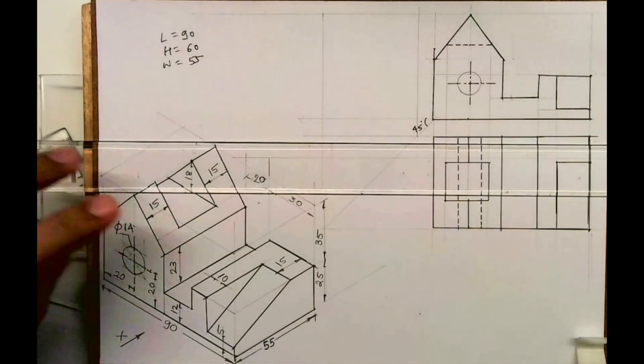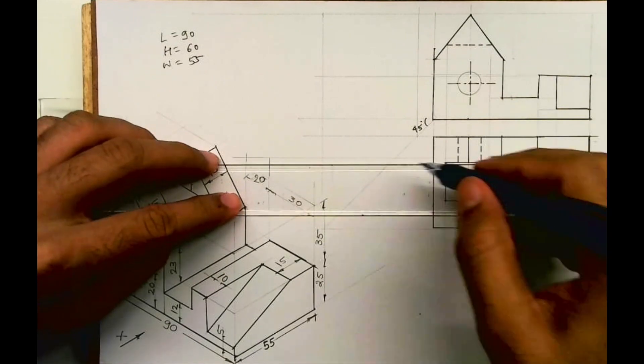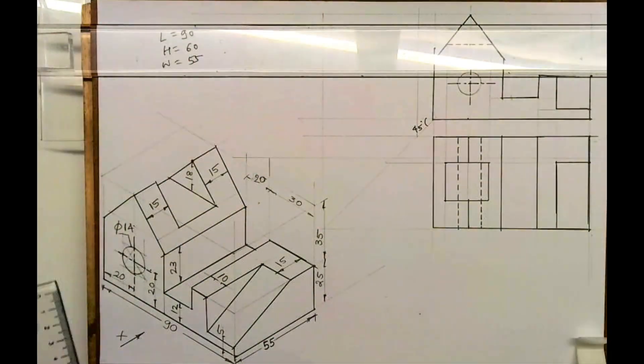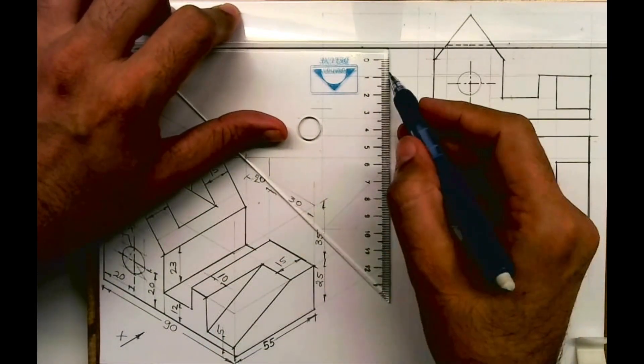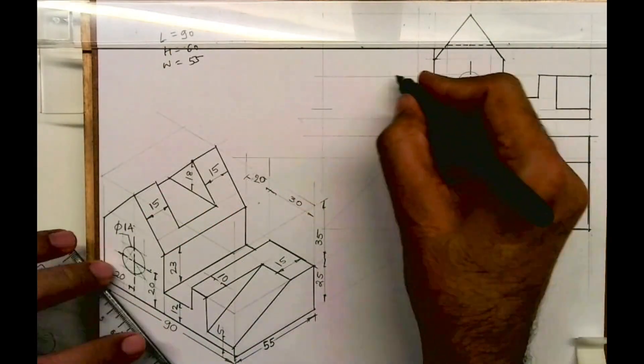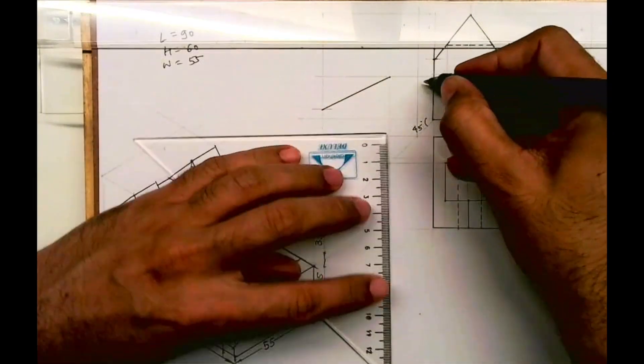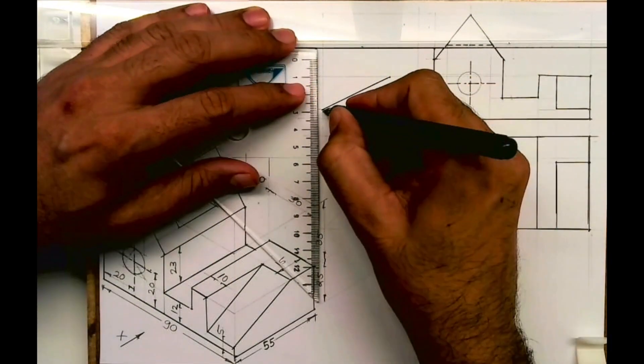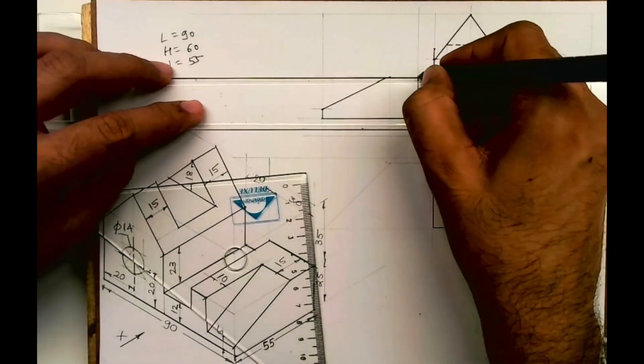Now we will do the side view. I'll draw horizontal line. I'll extend this 15 and this 5. This is what we will get.